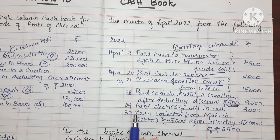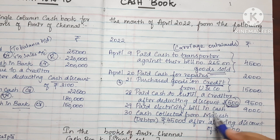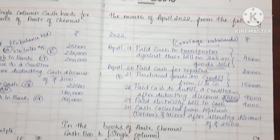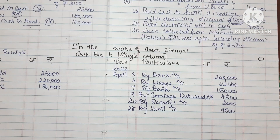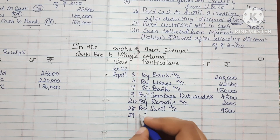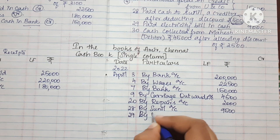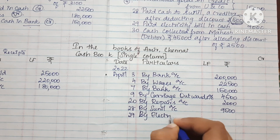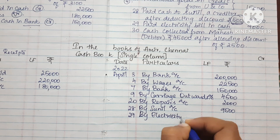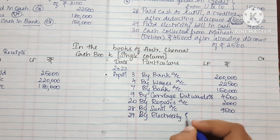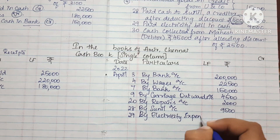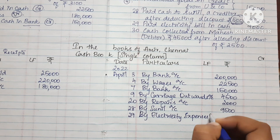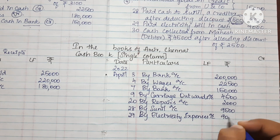On the 29th, paid the electricity bill in cash. The amount is Rs. 9,000. The entry is: By Electricity Expenses Account. The amount is Rs. 9,000.